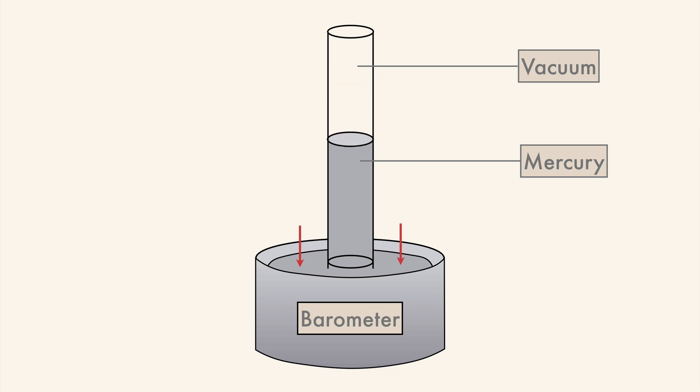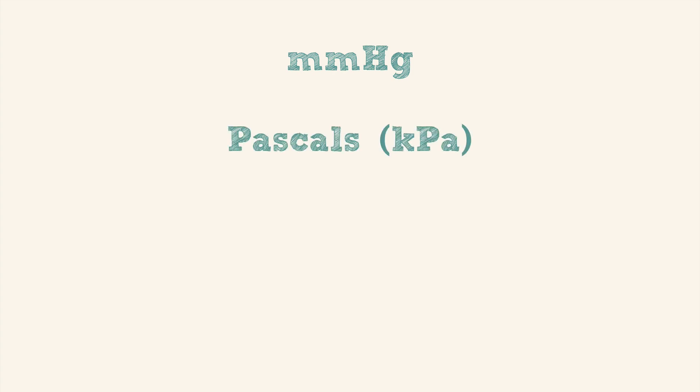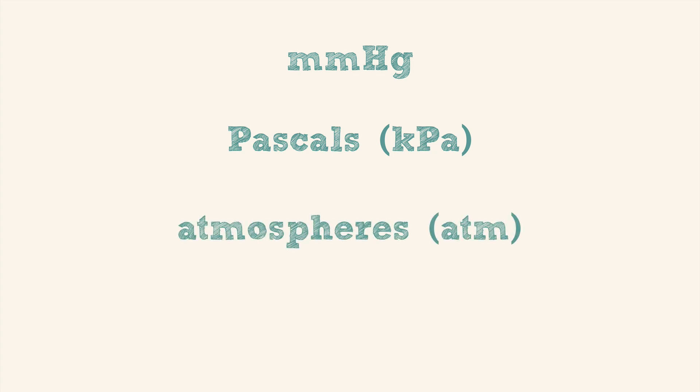This kind of barometer is read in millimeters of mercury because it measures the change in height of mercury inside the barometer. But this isn't the only measure of pressure. In addition to millimeters of mercury, there are pascals, which are usually measured in kilopascals and are the SI unit of pressure. There are atmospheres, or ATM, where one atmosphere is standard. And lastly, the torr, which is basically just another name for millimeters of mercury.